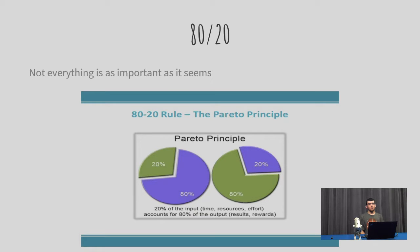The 80-20 rule is a little bit of a complicated rule, but pretty much the definition is that not everything is as important as it seems. For example, in slides, adding small things like bullet points or little things like that, you know, they are nice to do.